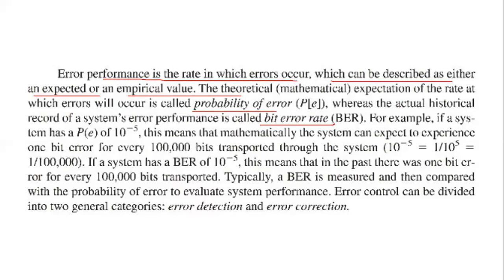If a system has a probability of error of 10 to the minus 5, this means that mathematically the system can expect to experience one bit error for every 10^5 bits transported through the system. If a system has a BER of 10 to the minus 5, this means that in the past there was one bit error for every 10^5 bits transported. Typically, a BER is measured and compared with the probability of error to evaluate system performance.